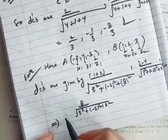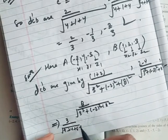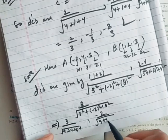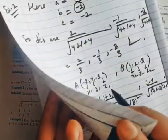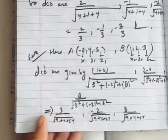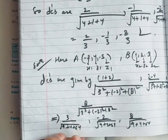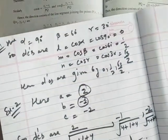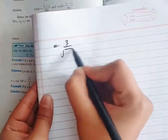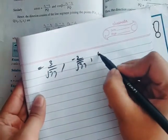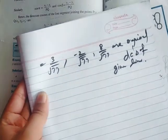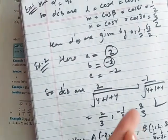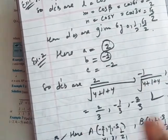Solving: 9 + 4 + 64 = 77. So the required DCs are (3/√77, -2/√77, 8/√77). I hope you understand — to find DCs, either the angles alpha, beta, gamma will be given, or two points will be given. You need to learn both equations so you can easily solve questions.